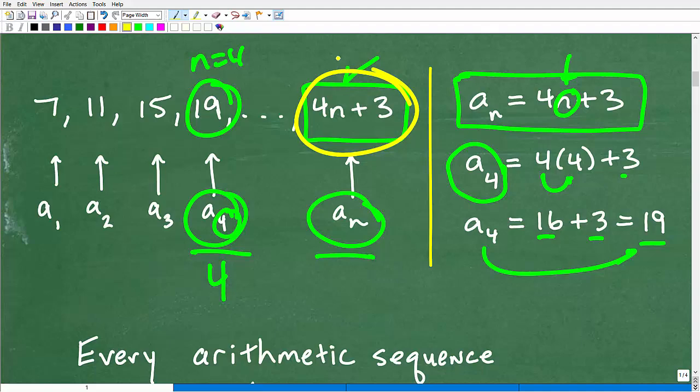Well, this is what this video is about because here, hopefully, you can see that it's pretty easy to figure out what the 100th term of this sequence is because n is equal to 100. And I could just replace this n with 100, and you could see that the answer is going to be 403.